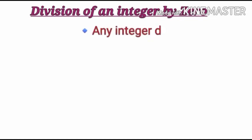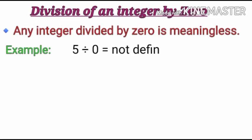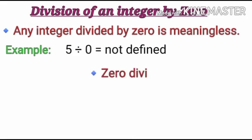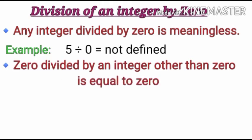Any integer divided by 0 is meaningless. That means we cannot divide any integer by 0. And on the other side, 0 divided by any integer other than 0 is equal to 0. That means we can divide 0 by any integer, either negative or positive, the result will be equal to 0.